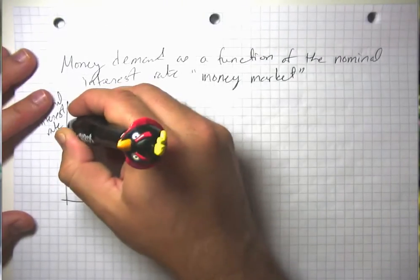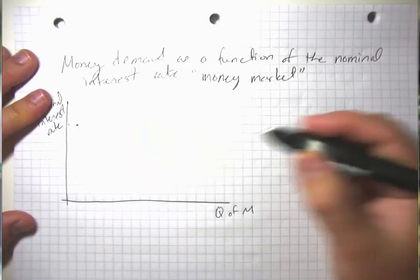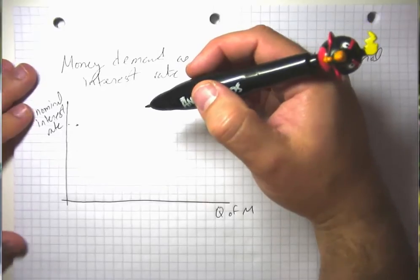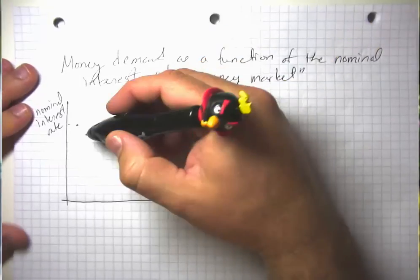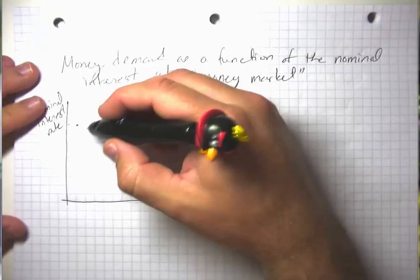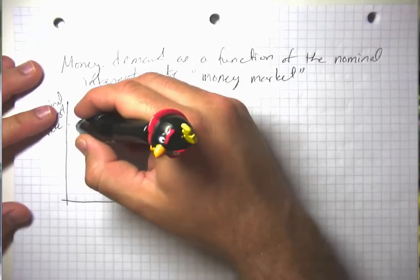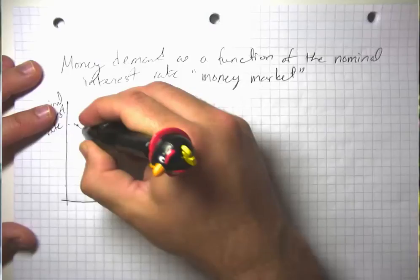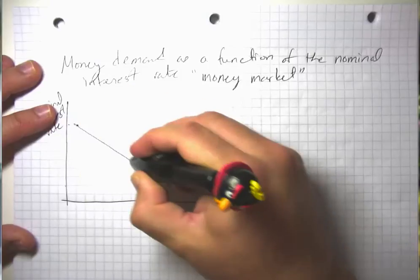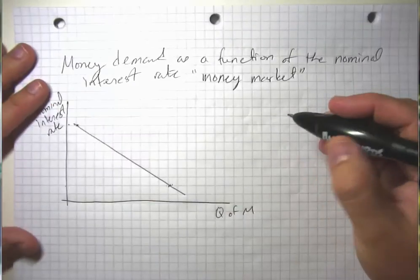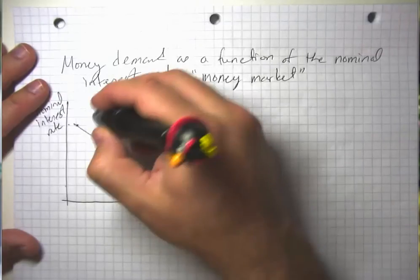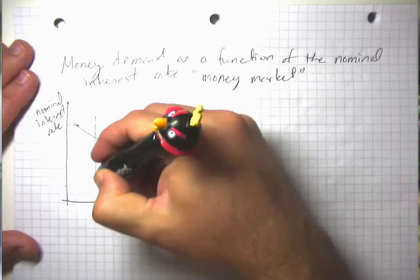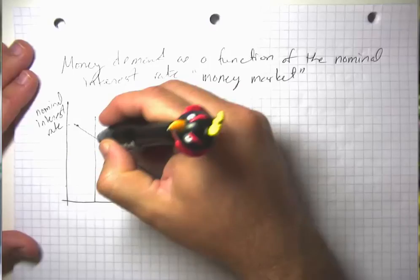And we think that when interest rates are high, people are going to try to economize on their use of money because they don't want to pay to borrow that money or they would rather put their money in a savings account where it gets an interest rate that's pretty high. But when interest rates are low, then people want to demand more money. They're more willing to have money sit there in their checking account because they're not passing up on very much interest by having it sit there. And then we think that the actual nominal interest rate in equilibrium is determined by where the money supply curve intersects the money demand curve.